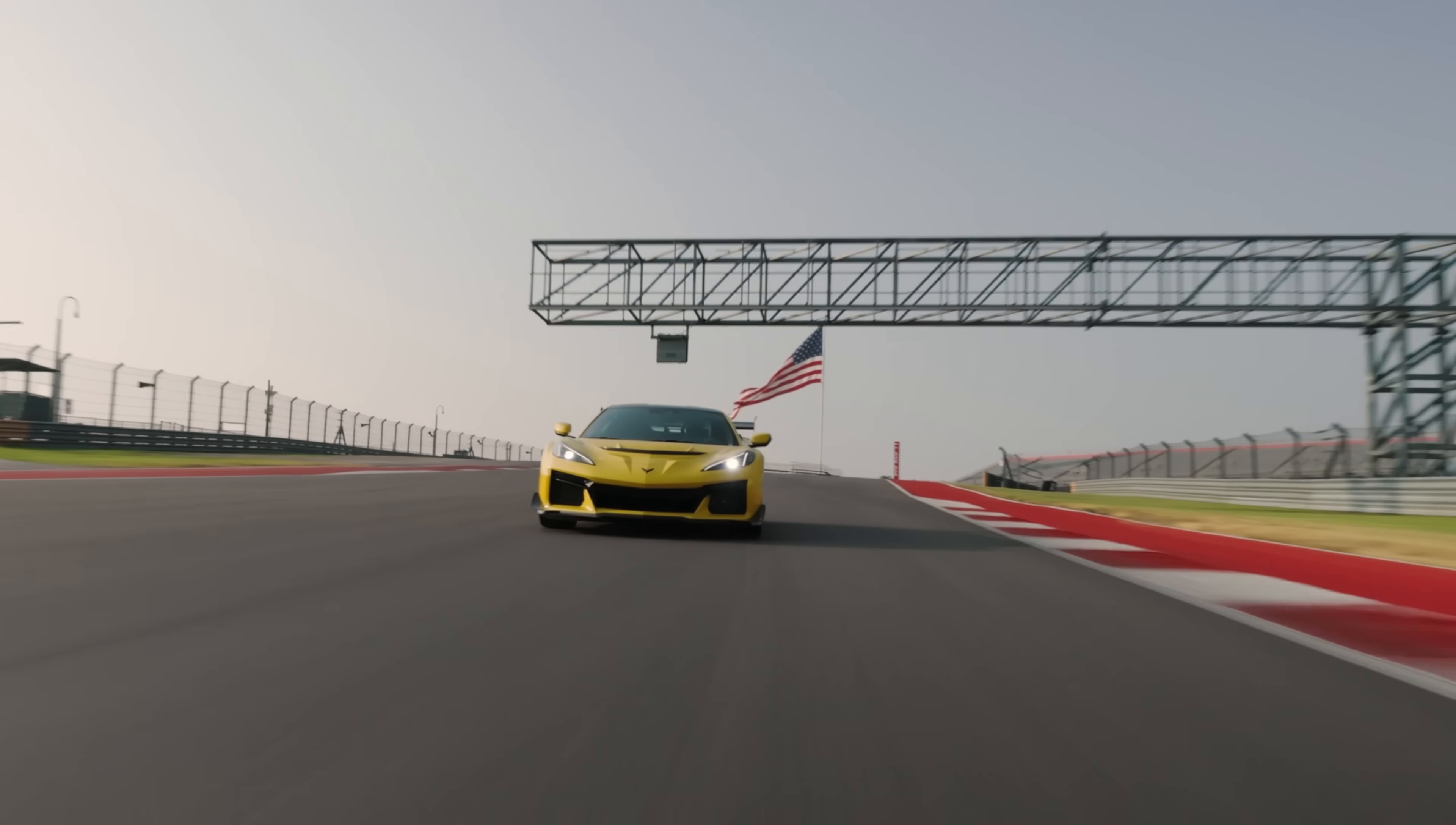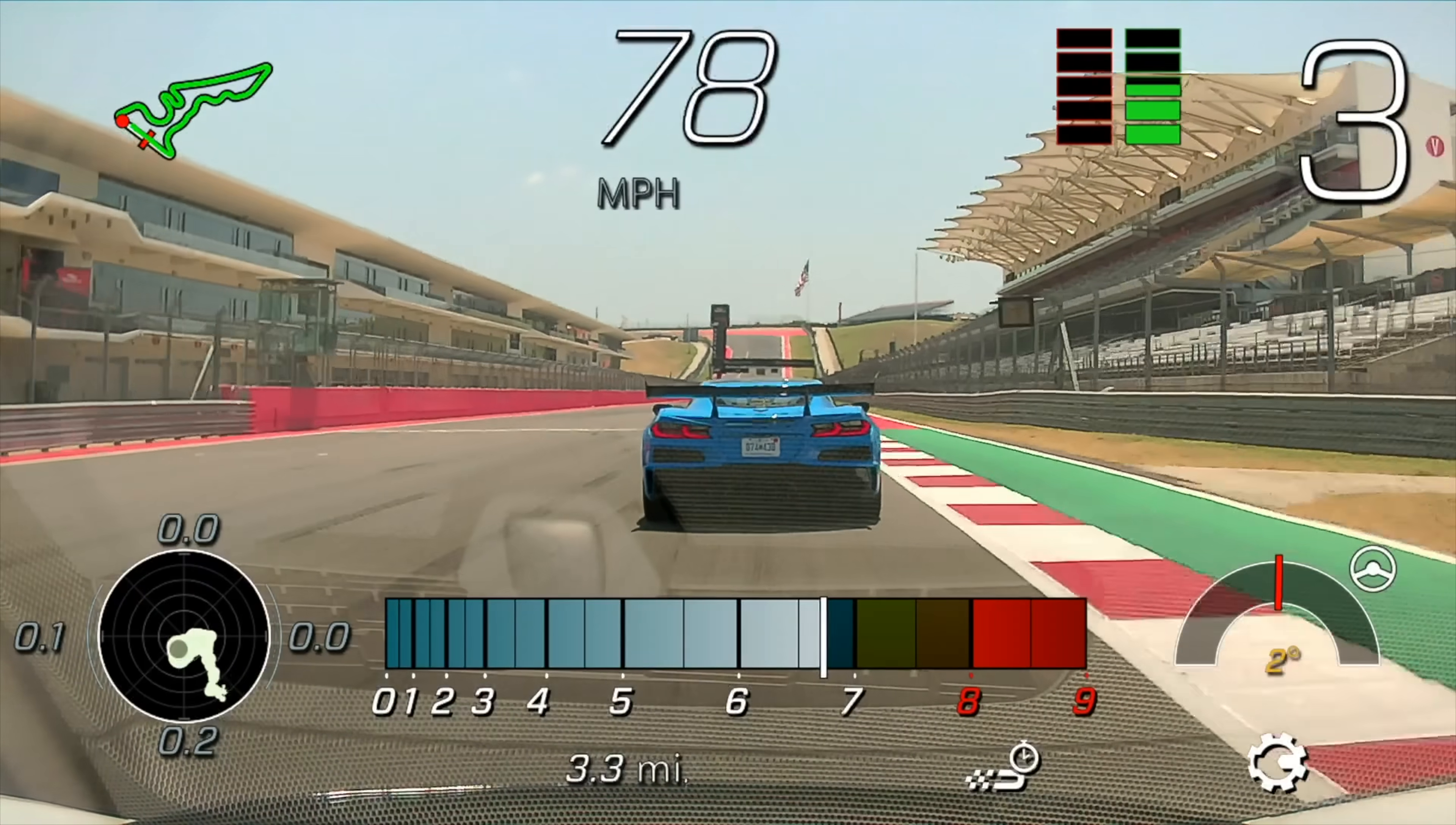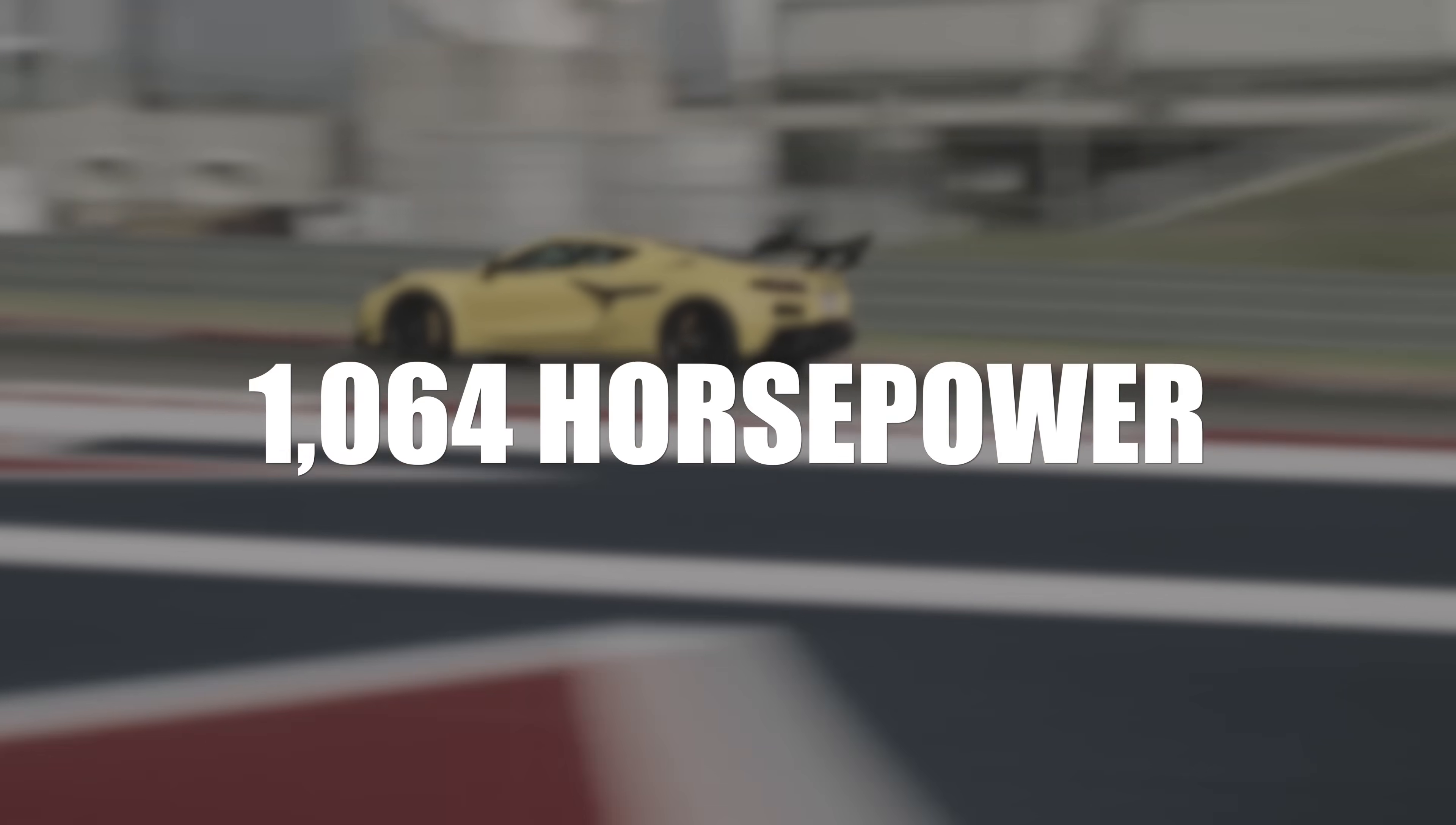And what better vehicle to demonstrate how far we've come than the C8 Corvette ZR1, with over 800 pound-feet of torque from 3,000 to nearly 7,000 RPM, a clever anti-lag system, and beautiful throttle control in a car with 1,064 horsepower.